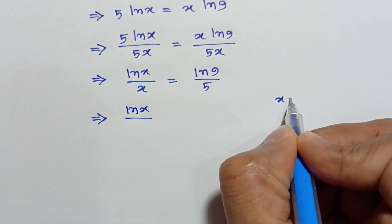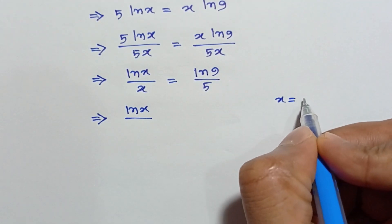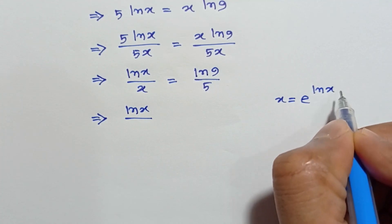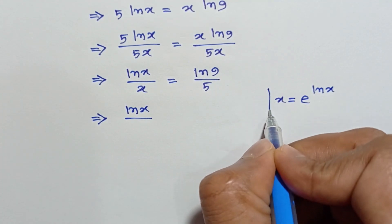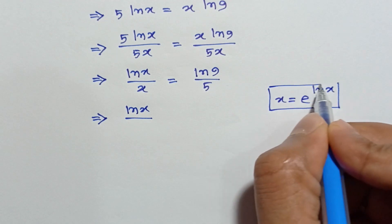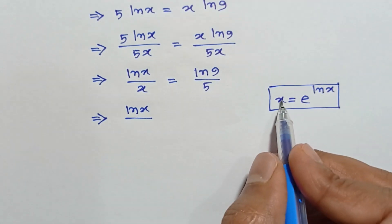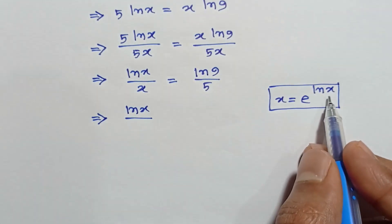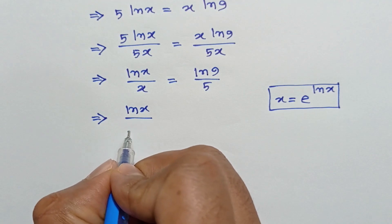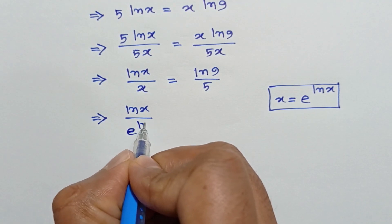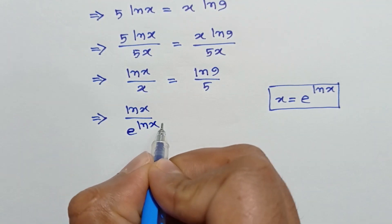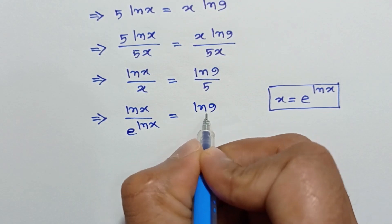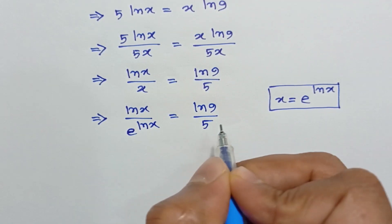Now, ln x over x can be written as e to the power ln x over e to the power ln x. Writing x as e to the power ln x, we have e to the power ln x over e to the power ln x is equal to ln 9 over 5.